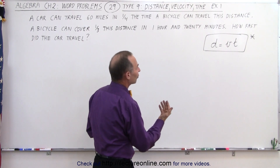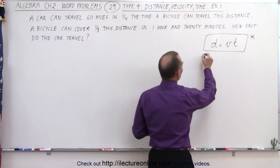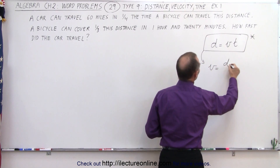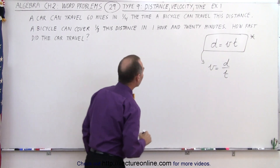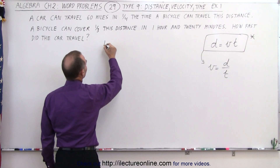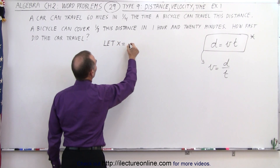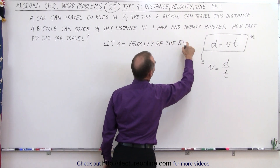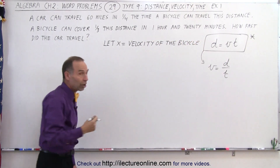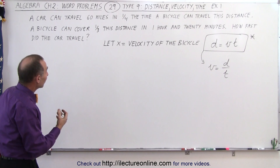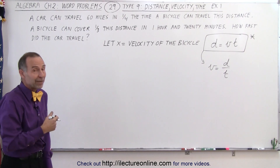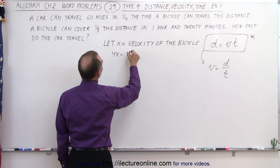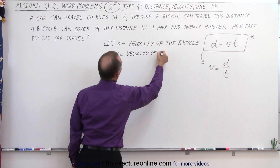If we want to find the velocity of the bicycle, we can take the equation and solve it for v, so v equals distance divided by time. Let x equal the velocity of the bicycle. Since the car can travel the same distance in one quarter the time, the car will be four times as fast, so 4x equals the velocity of the car.